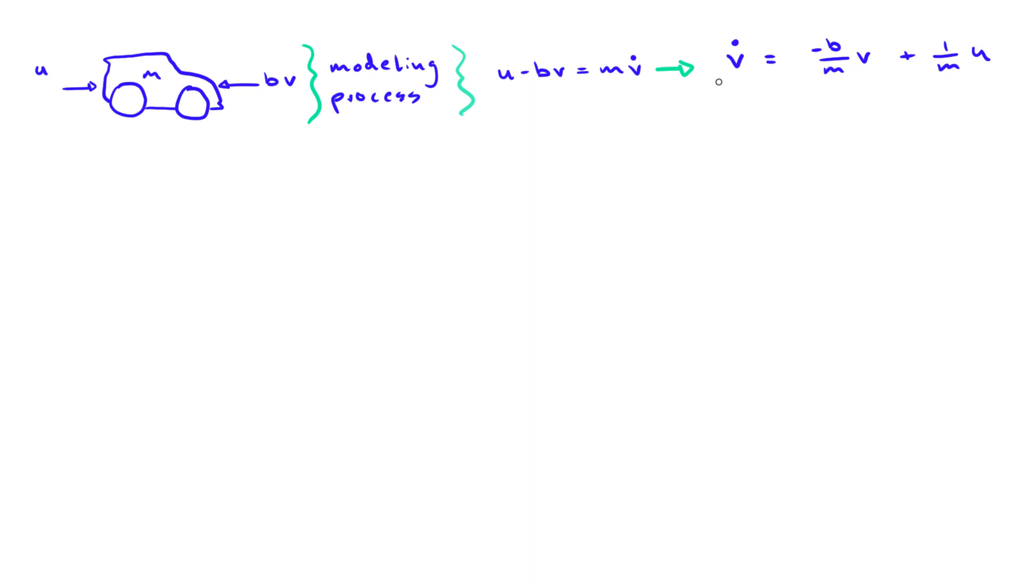Once you do this, it's important to view the form of the equation above all else. In other words, v dot, which is the highest output derivative, is isolated on the left-hand side and is equal to the sum of two things.